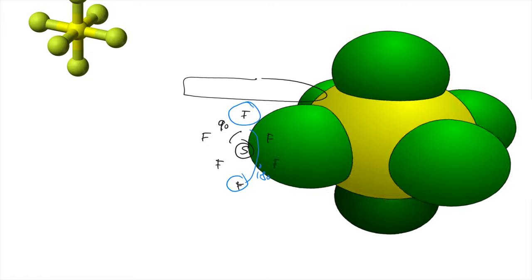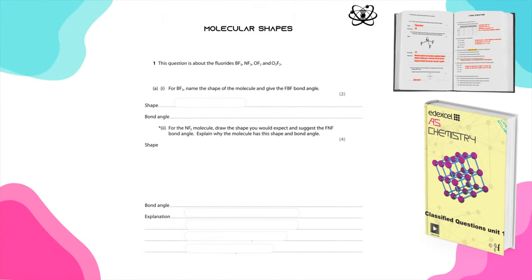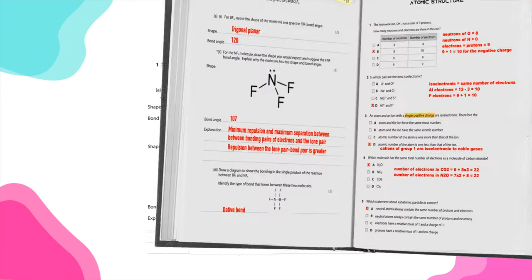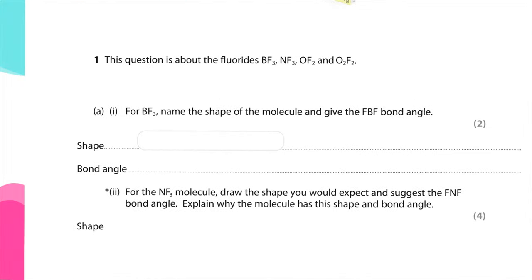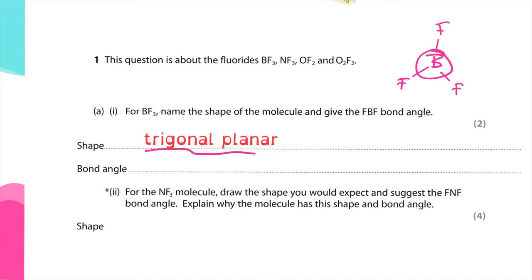Let's solve a written question from my classified questions for unit one, found on page 45. The question asks: for BF3, name the shape of the molecule and give the bond angle between boron and fluorine. First, I'll sketch the shape — boron in the middle with three fluorine around the center. Remember, boron doesn't have any unshared electrons. For that reason, the shape is trigonal planar. The angle is 120 degrees.